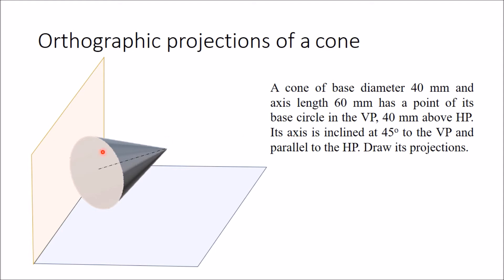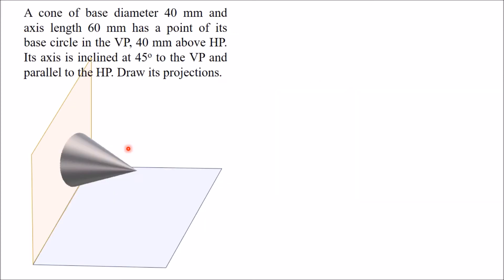The axis of this cone is inclined at 45 degrees to the VP and parallel to HP, so we have to draw the projection of this cone in two stages. In the initial stage, we keep this axis perpendicular to the VP and then draw its projection. With the axis perpendicular to VP, the front view will appear as a circle and the top view will appear as a triangle.